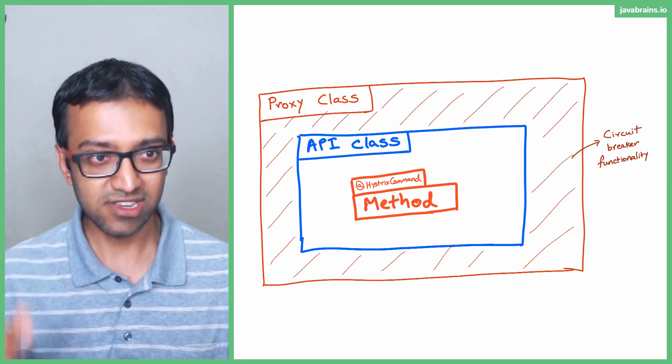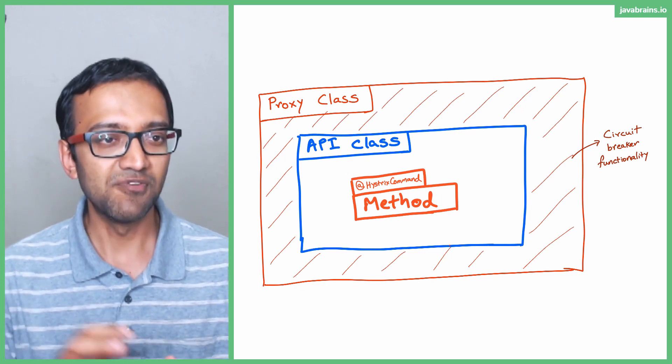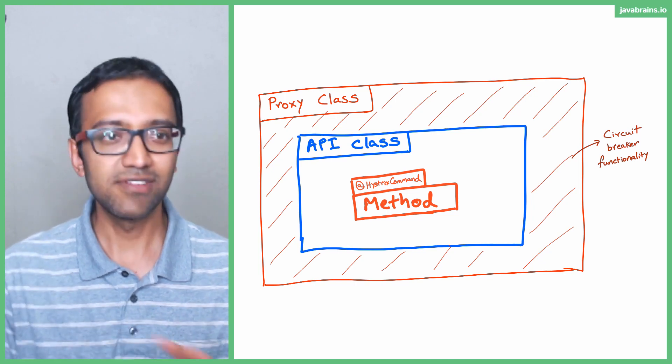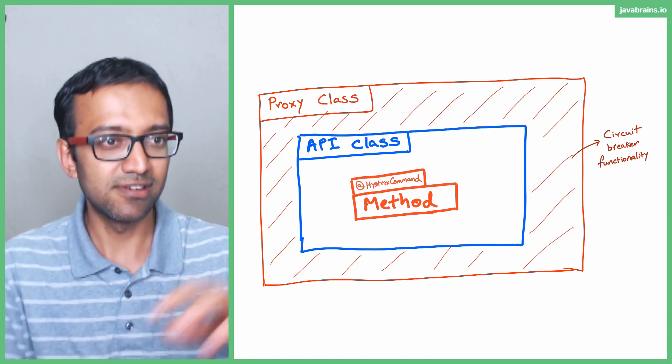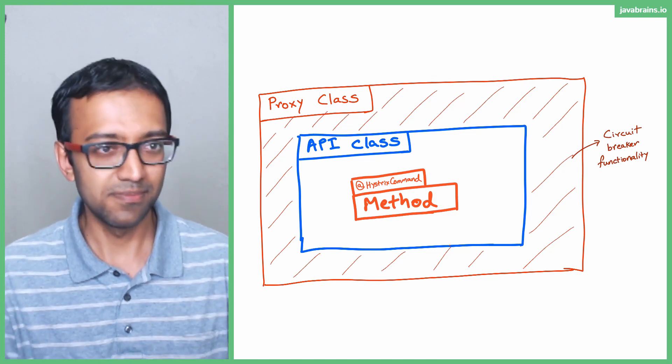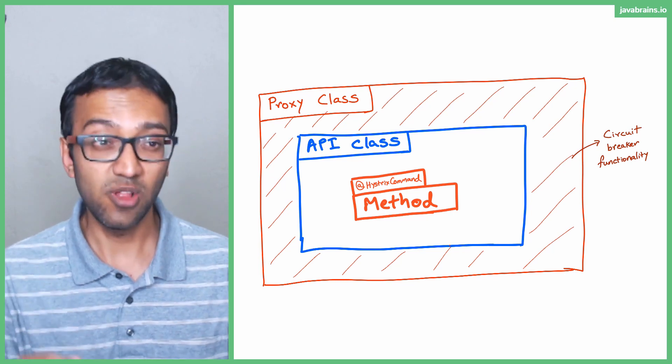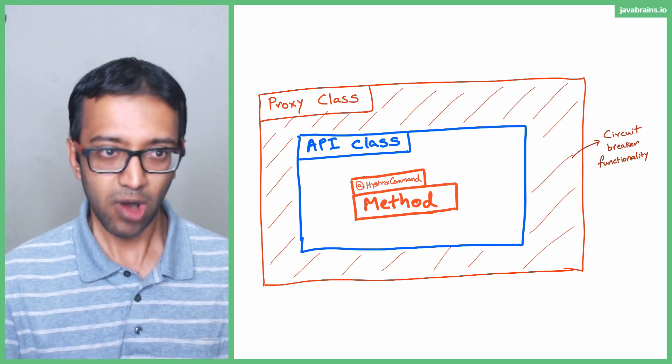But remember, this is how Hystrix is handling it, just creating this proxy class. It's creating this wrapper class which contains that circuit breaker logic. And when everything is good, all that the wrapper class is doing is just calling the underlying method and returning the response to the caller. So it's doing kind of like a no-op, but it's always keeping track. Any questions before we move on?